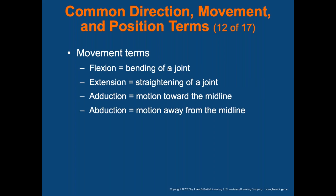Some other movement terms: flexion is bending of a joint — like flexing your muscles by bending your arms. Extension is straightening of a joint. Hyperextension is overextending the joint, which is when we start tearing ligaments and tendons. Similarly, hyperflexion is overflexion of the joint.